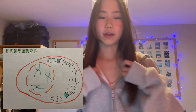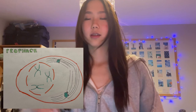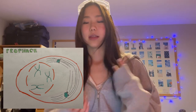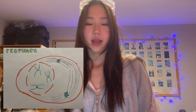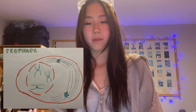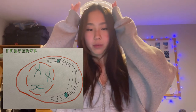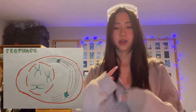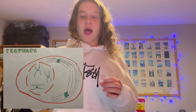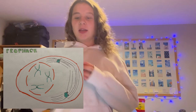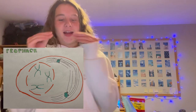In prophase, the chromatin condenses into discrete chromosomes, the nuclear envelope breaks down, and spindles form at opposite poles of the cell. Chromatin fibers coil into chromosomes, with each chromosome having two chromatids joined at a centromere.